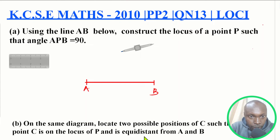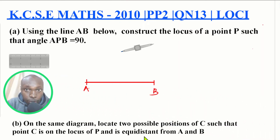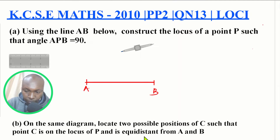Hello and welcome to the lesson: KCC Mathematics 2010 Paper 2, Question 13. The question is on loci. Part A: using the line AB below, construct the locus of point P such that angle APB equals 90 degrees. Part B: on the same diagram, locate two possible positions of C such that point C is on the locus of P and is equidistant from A and B.